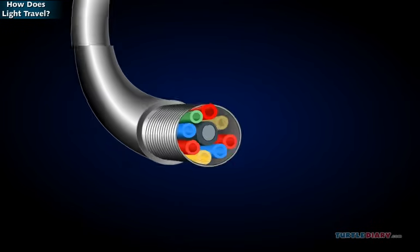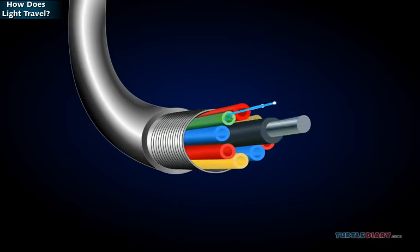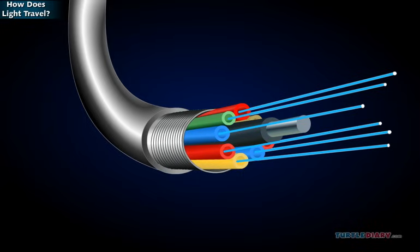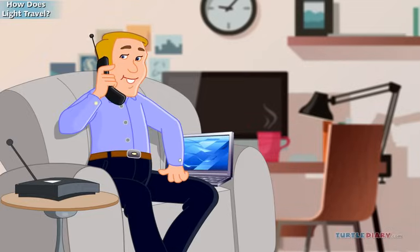Light is used in bundles of thin strands of plastic or glass, called optical fiber cables. These bundles carry phone calls and e-mails around the world in a few seconds.